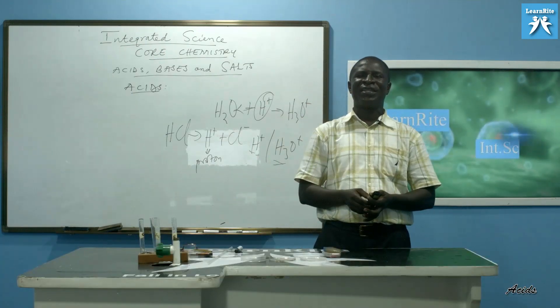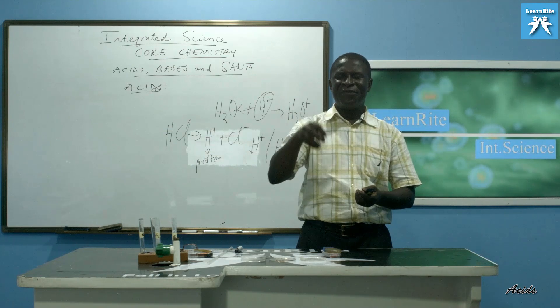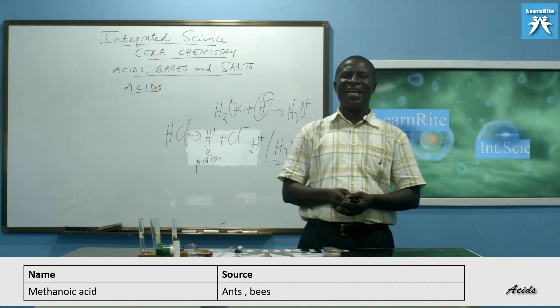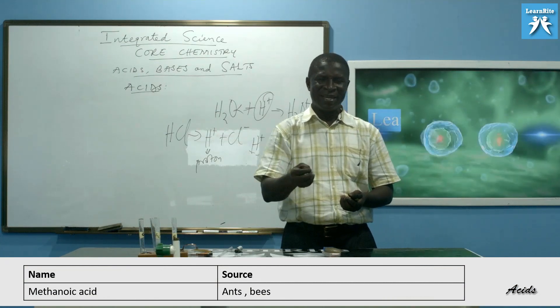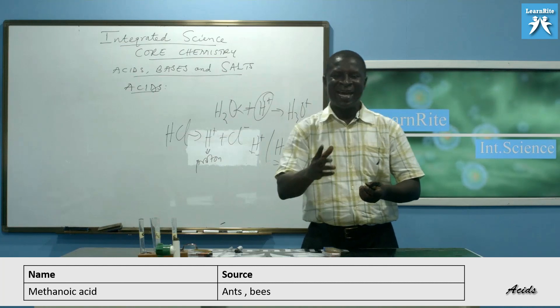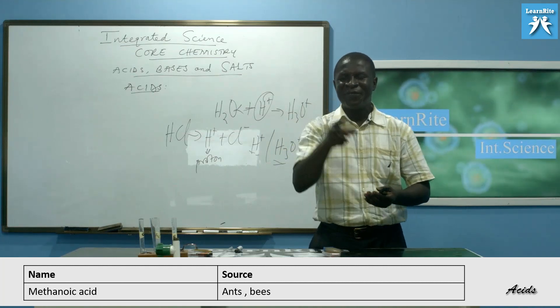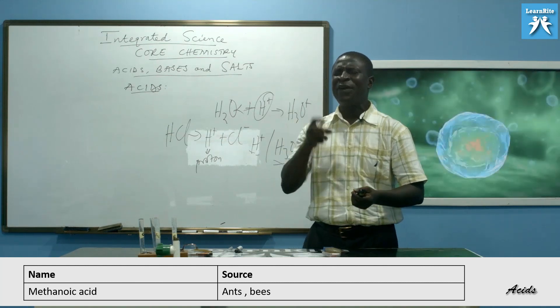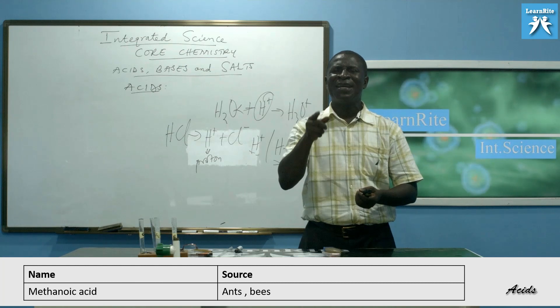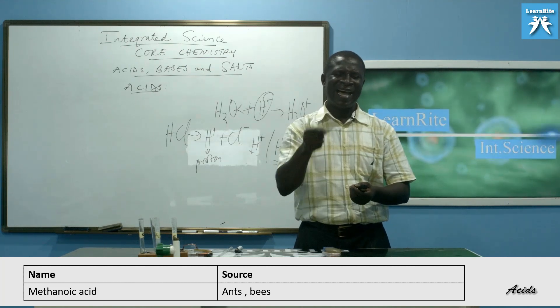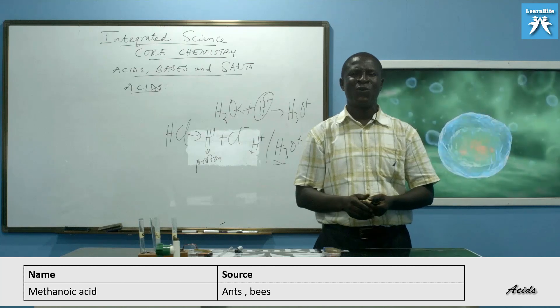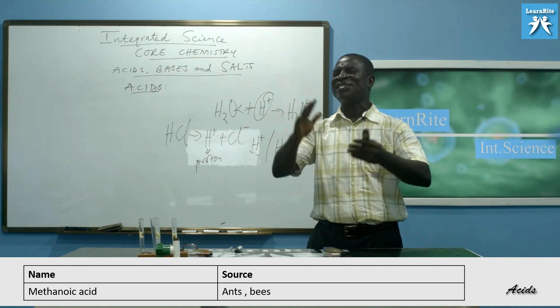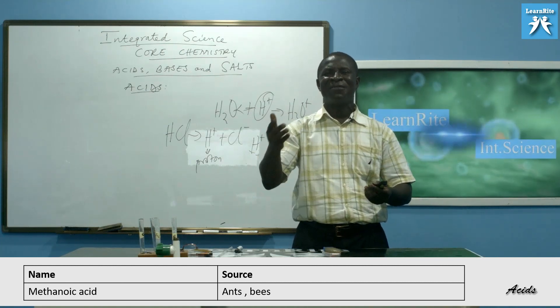So I have some few ones on the screen and I've even indicated the source. Where do we get them from? We have methanoic acid. We can get them from ants and bees. Have you been bitten by an ant before or been given a sting by a bee? You see that when an ant bites you, it is very painful. It is the methanoic acid that the ant has injected into you and you feel the pain. That is it. It is natural. It is found in ants and bees.